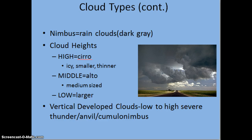When we talk about cloud types, we also need to talk about the heights at which they develop. If a cloud develops at a very high altitude, we put 'cirro-' in front of the name — these are icy, smaller, thinner clouds. If clouds are developing at a mid-altitude, we put 'alto' in front of the name, such as altostratus — medium-sized clouds. Our low clouds are much larger in size, and most of our lower clouds are often cumulus clouds.